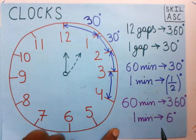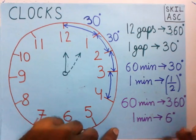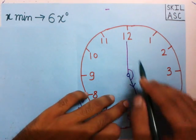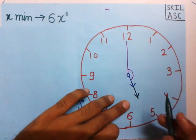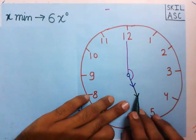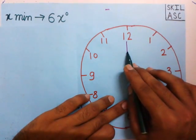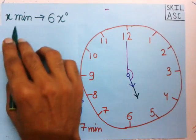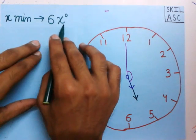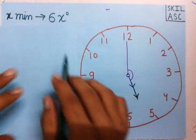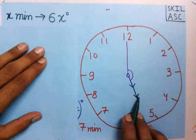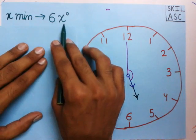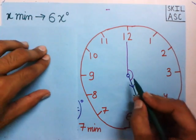The minute hand covers 6° per minute. Since the minute hand takes x minutes to go from the reference position to the required position, the angle made by the minute hand with respect to the reference line is 6x degrees.